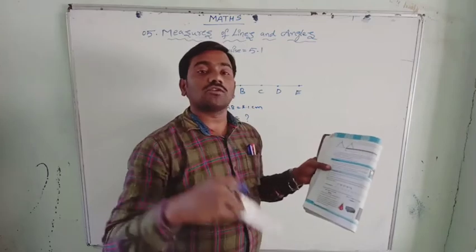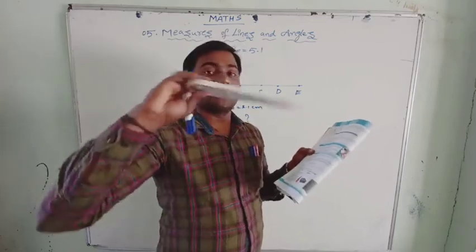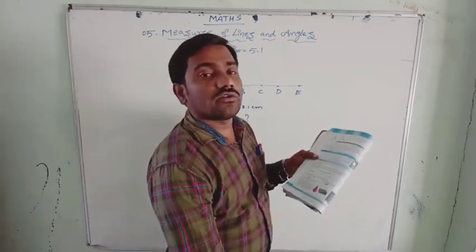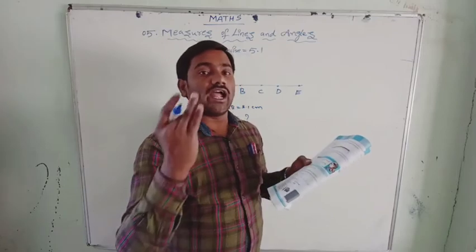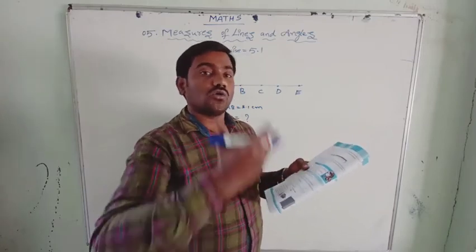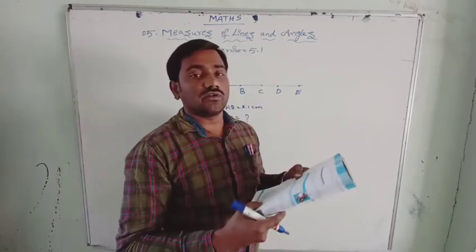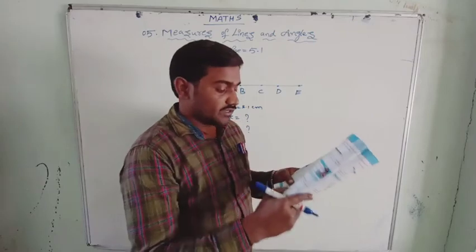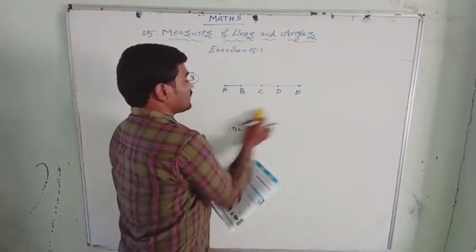That length of line segments you need to measure. If it is possible, you go with the divider and measure the length of line segment. If not, you go for a ruler. Without angular view. The top view you observe, you will get a correct one. Next, here is the fourth question.